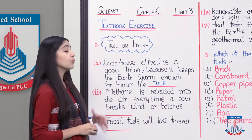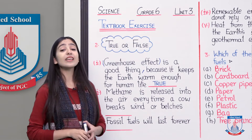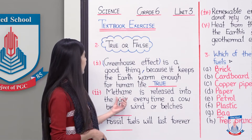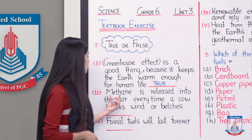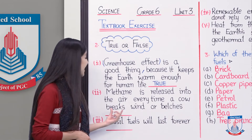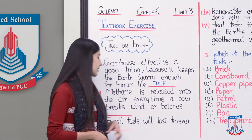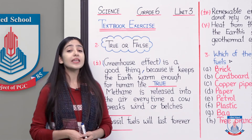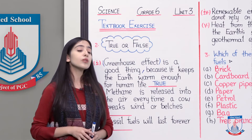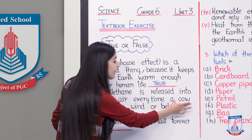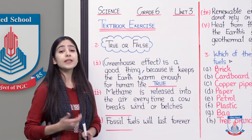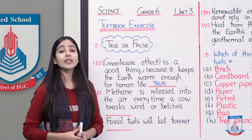Statement number two: 'Methane is released into the air every time a cow breaks wind or belches.' Methane is a gas that is released when a cow belches. Now, what is belching? If we talk about cattle overall — including buffalo, sheep, horse, and similar animals — they graze, meaning they eat grass.